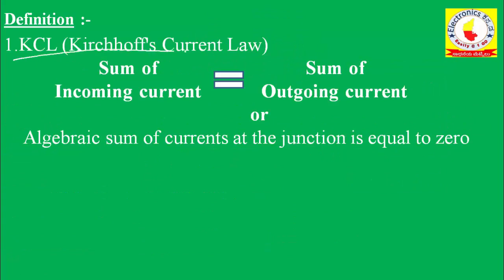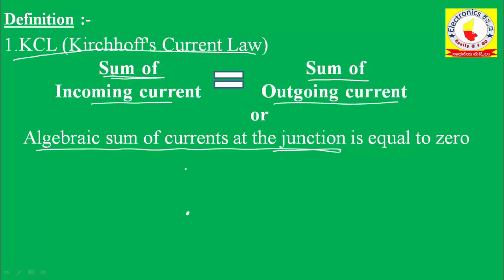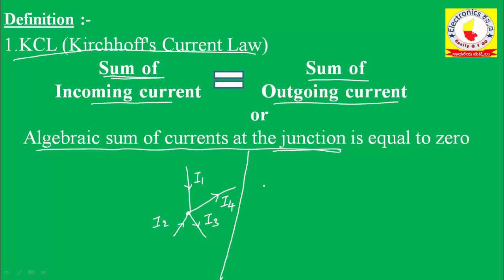Now let us talk about Kirchhoff's current law. At a node or junction, the sum of incoming currents is equal to the sum of outgoing currents. Junction means a principal node, where more than two elements join. For example, if currents I1 and I2 are flowing in, and currents I3 and I4 are flowing out, then by the first definition: I1 + I2 = I3 + I4.